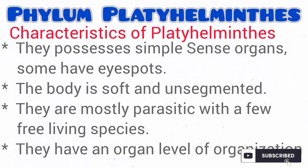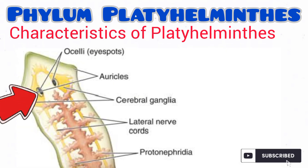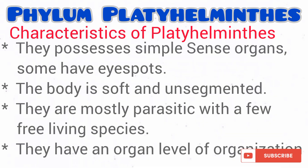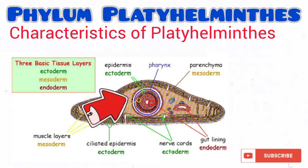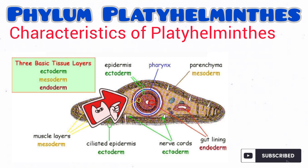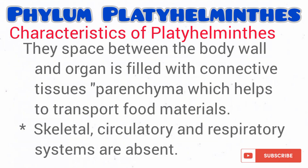They possess simple sense organs; some actually have eyespots. As you can see from the diagram, their body is soft and unsegmented. We know that some are parasitic, such as the tapeworm and the flukes, while other species are actually free-living. They are at the organ level of organization. The space between the body wall and the organs is filled with connective tissue termed the parenchyma, which actually helps in food transportation.